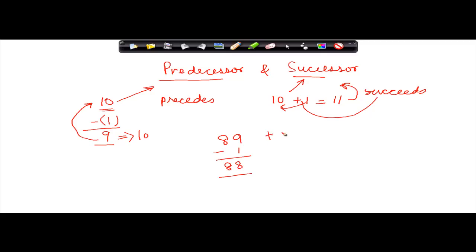To get a successor of 89, I add 1 to it and I get 90. So 90 is the successor of 89 and 88 is the predecessor of 89. Similarly, you can get the predecessor or successor of any number.